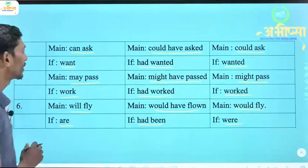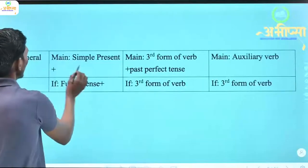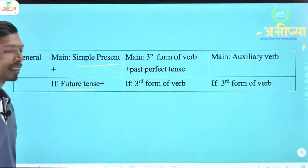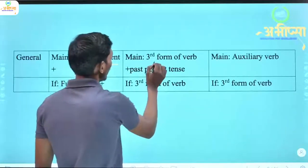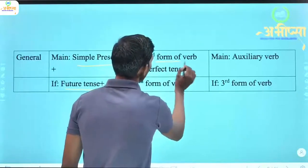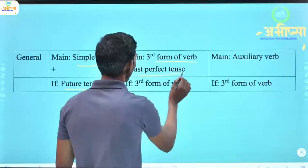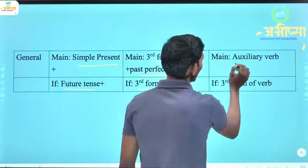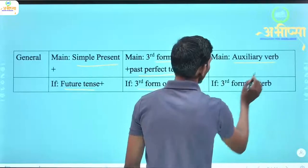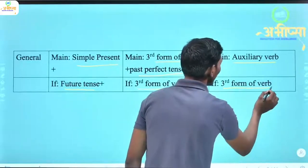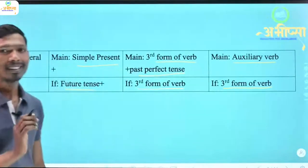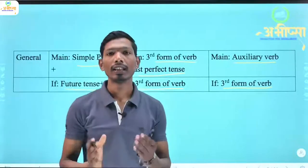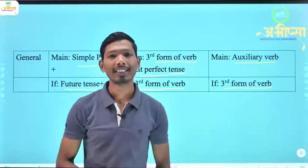This way we can identify the verbs and show that possible condition uses simple present and future tense; impossible condition uses past perfect tense and verb's third form; and imaginary condition uses auxiliary verb with verb's third form.